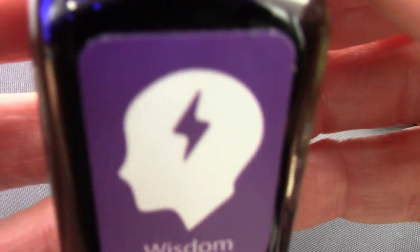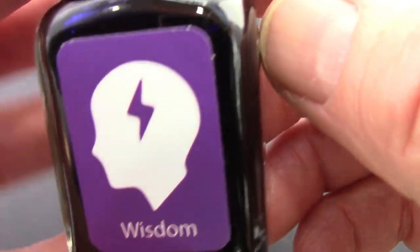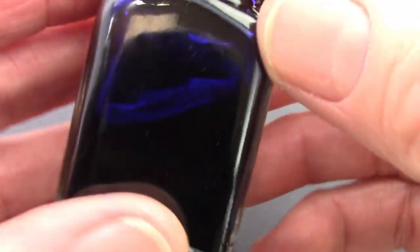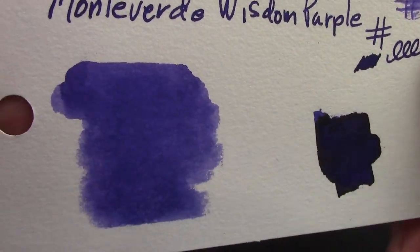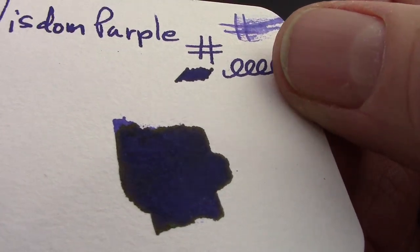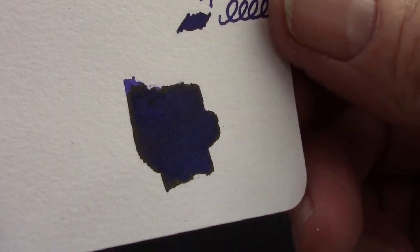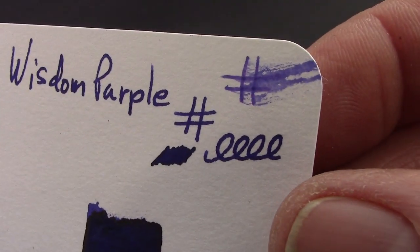There was no ink that screamed out at me, but I thought wisdom would make a lot of sense. This is a Monteverdi ink. You know, I've enjoyed the DC Super Show blue. So I saw these for sale on eBay and I picked up two of them. Here's the color card. It's a dark purple. You might be able to pick up a little bit of sheen there, but wouldn't call it a sheening ink,